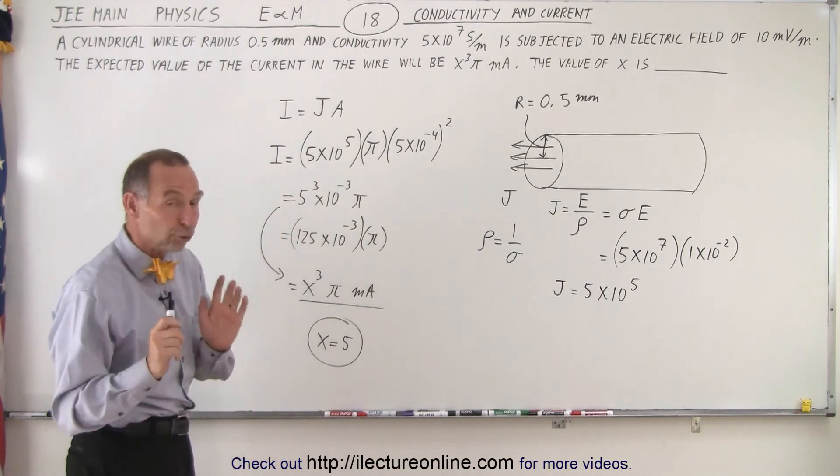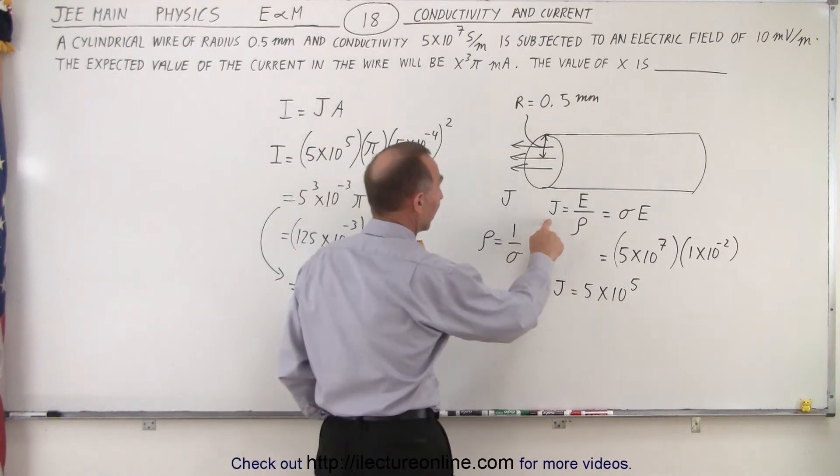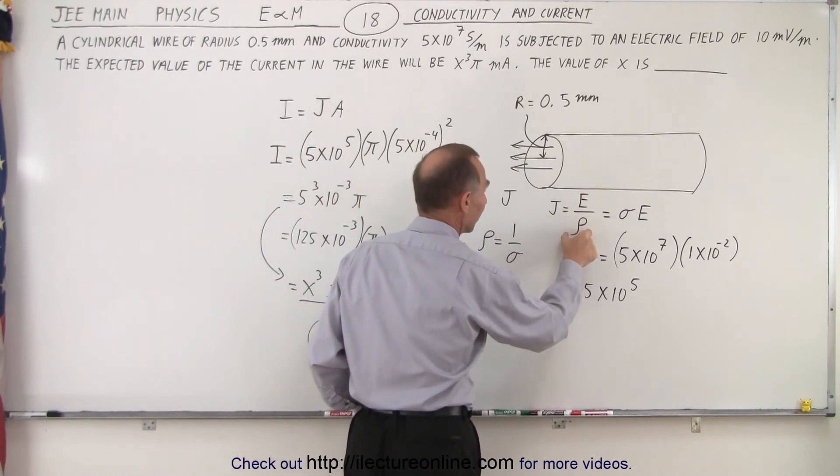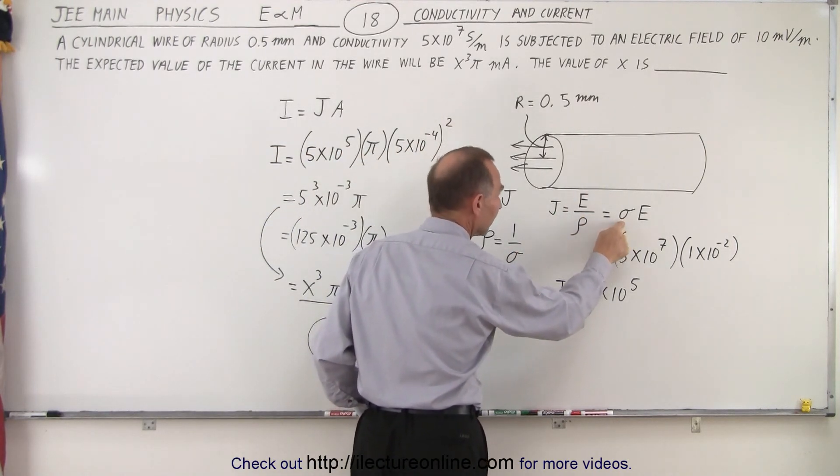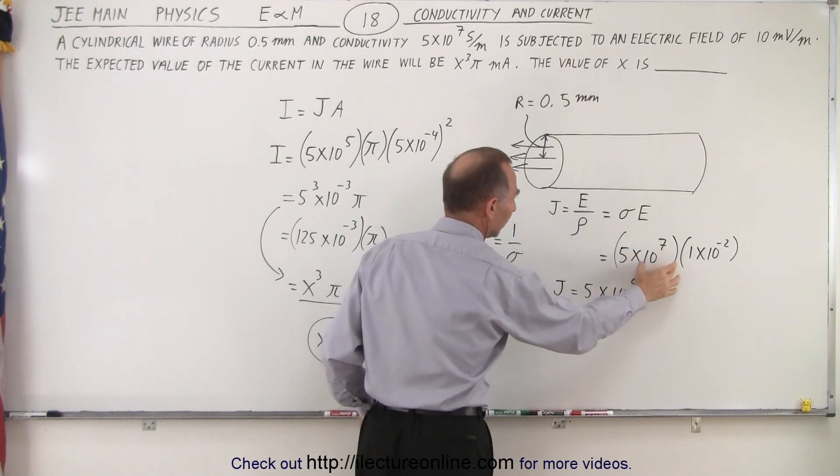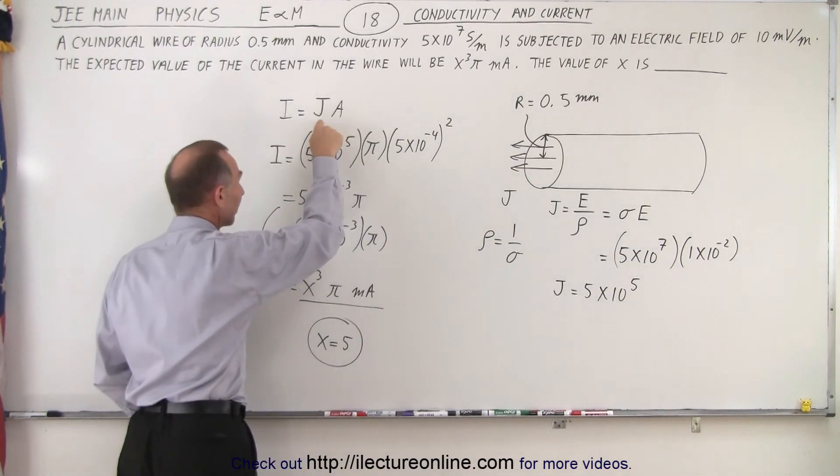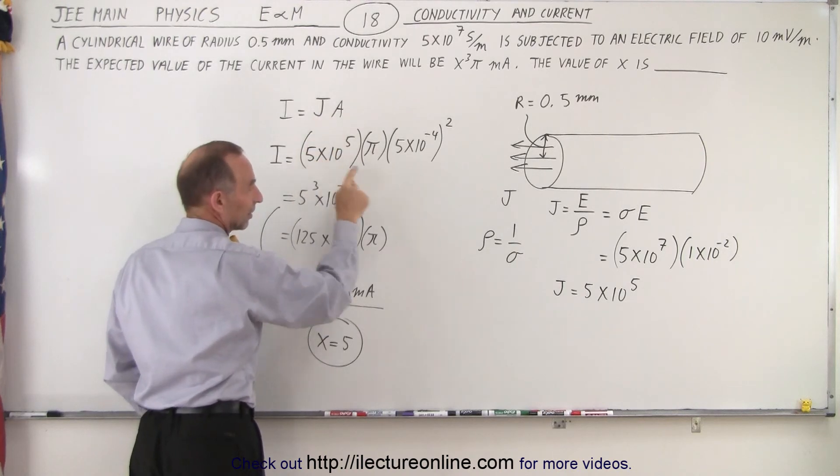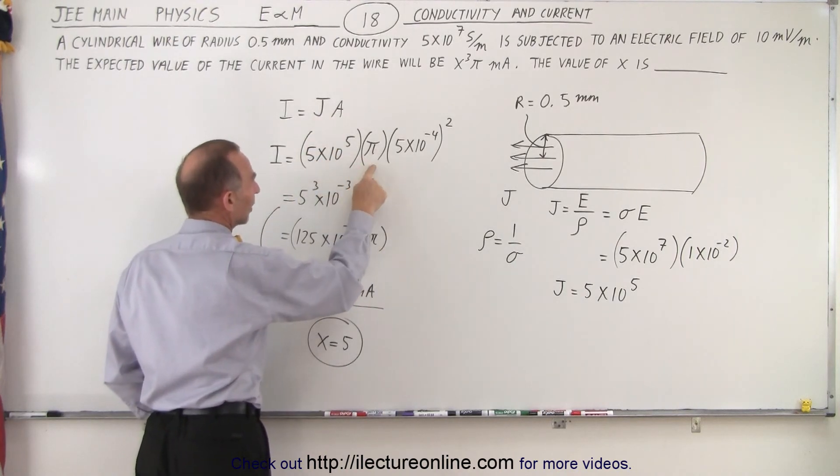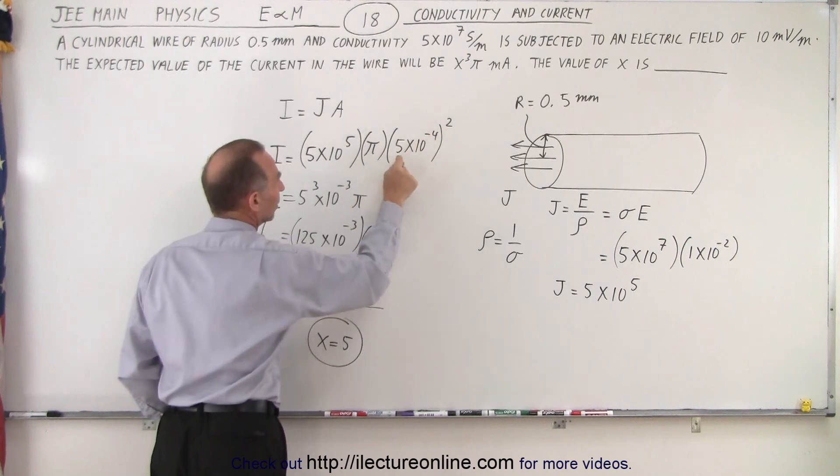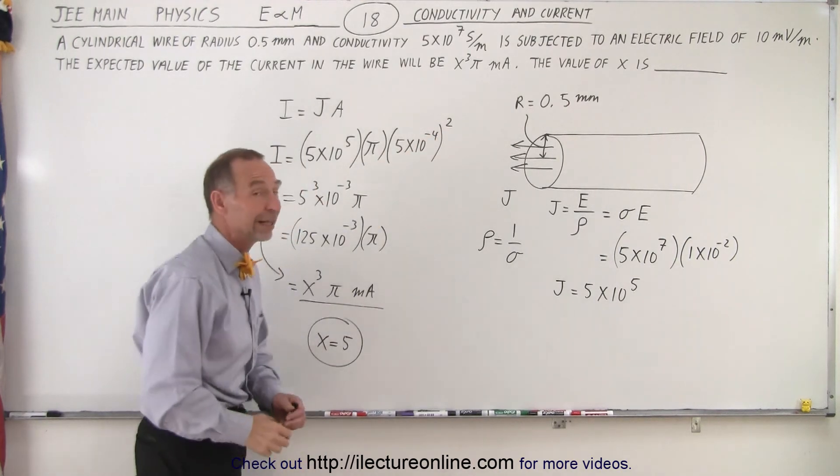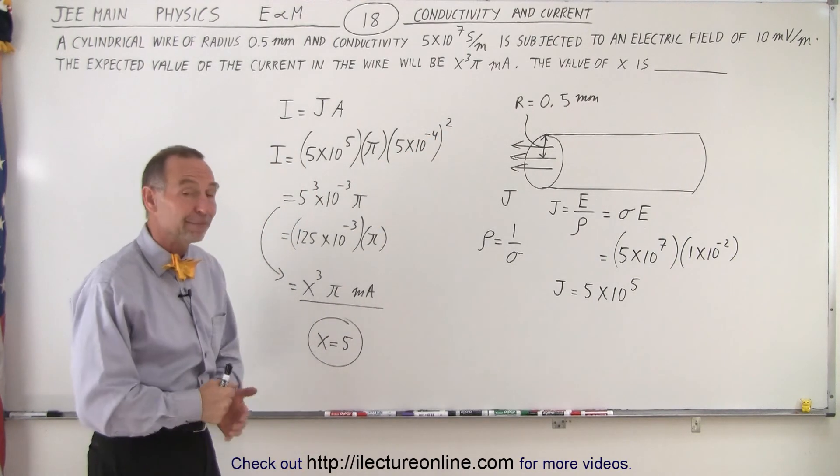So again, it's all about knowing that the current density is electric field divided by the resistivity or the conductivity times electric field. We're given both. We can find the current density. Then we come up here, that's indeed current density, that's then calculated times the area, which is pi times the radius squared. And this is the radius converted into meters.